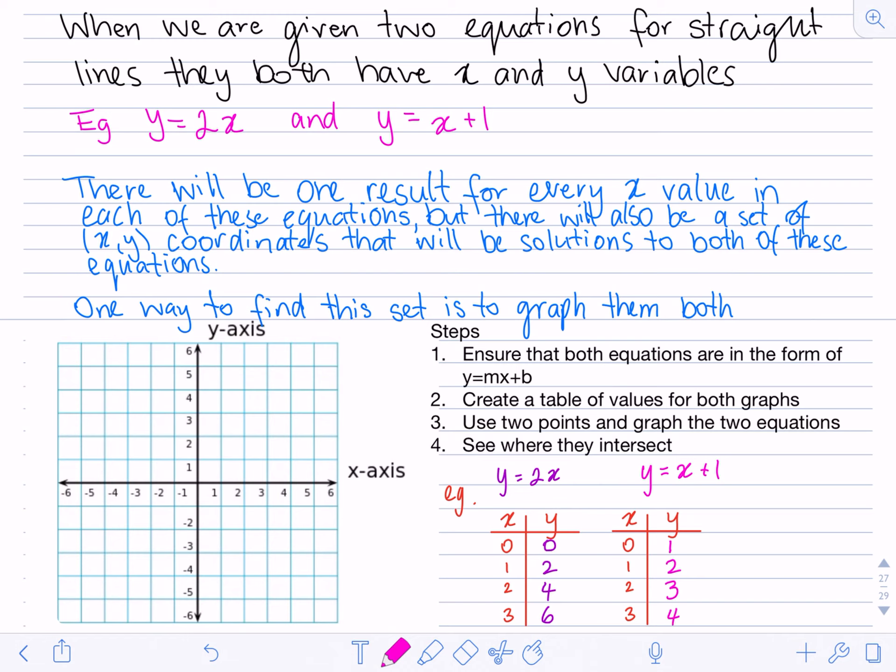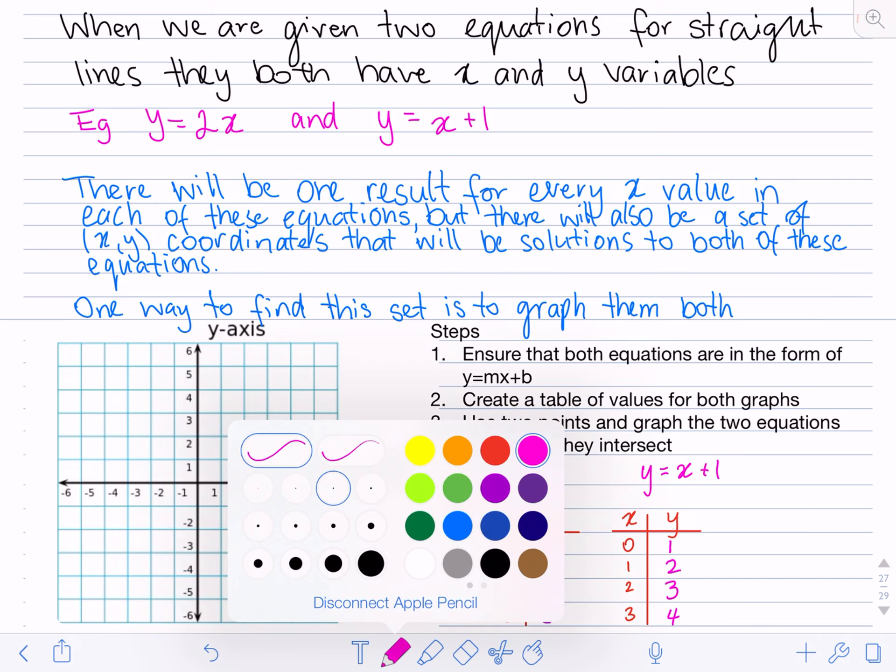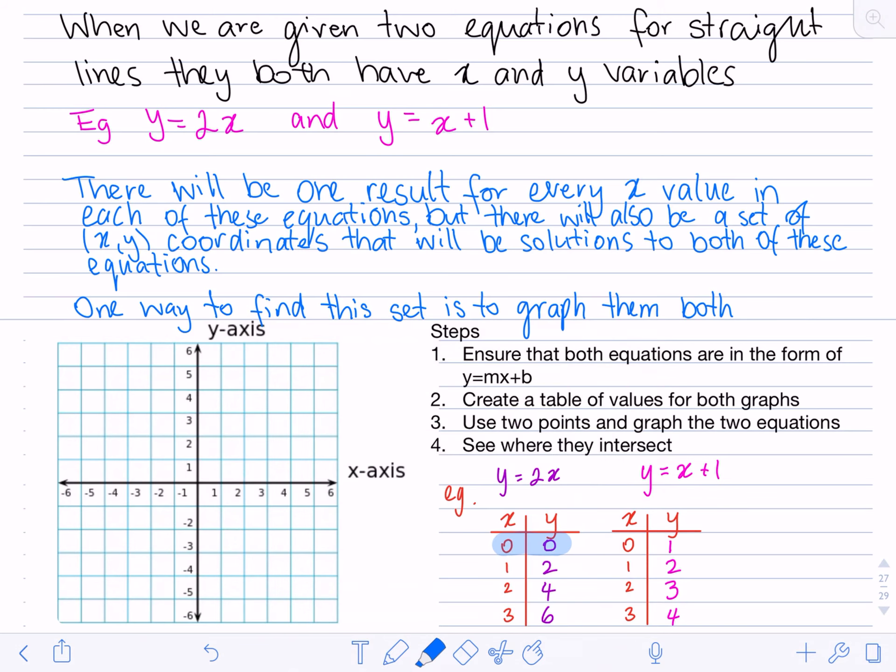So now step 3 is use 2 points and graph the 2 equations. So I'm going to do one in purple. I'm going to use 0, 0 and I'm going to use 2, 4. So let's do the first one in purple. 0, 0 right there and 2, 4. Crawl to 2, climb to 4. There, join them up with a ruler.